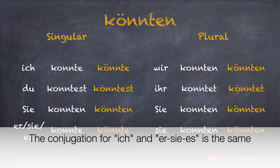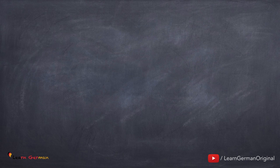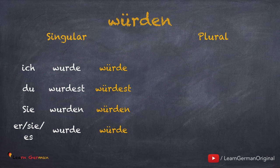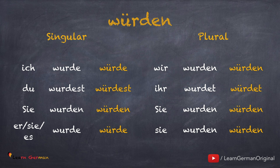Genauso wie bei Präteritum ist die Konjugation für ich und er/sie/es gleich. Und jetzt hier ist die Konjugation für Würden: ich würde, du würdest, sie würden, er/sie/es würde, wir würden, ihr würdet, sie/Sie würden. Der Konjunktiv 2-Form takes the Präteritumform and adds an Umlaut. It's very important to know the Präteritumform of all the verbs before you learn their Konjunktiv 2-Forms. Just like in Präteritum, the Konjugation for ich and er/sie/es is the same. If you want to revise Präteritum, you can do so by watching our videos on this topic. The link can be found below in the description.